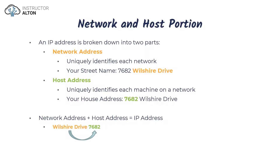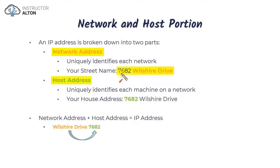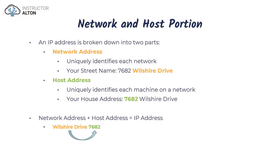Now let's talk about the network portion and the host portion. A very simple way to look at this is to think about a street address. Let's say we have a street address of 7682 Wilshire Drive. This address is broken up into two portions: we can think of the street as the network, and we can think of the houses on the street — each with their own number — as the host.